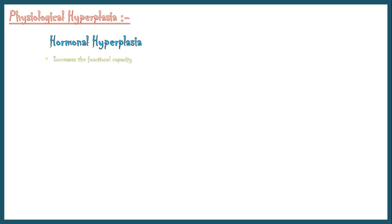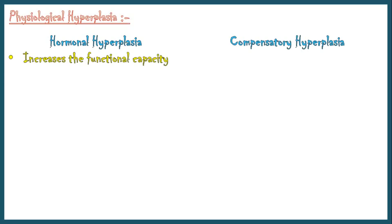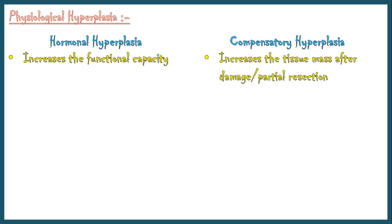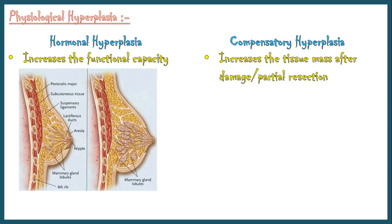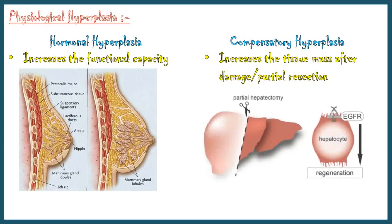Physiological hyperplasia can be divided into hormonal hyperplasia, which increases the functional capacity of an organ, and compensatory hyperplasia, which increases the tissue mass after damage or partial resection. Hyperplasia of the breast tissue in pregnancy is a good example of hormonal hyperplasia. Regeneration of the liver after partial hepatectomy is an example of compensatory hyperplasia.